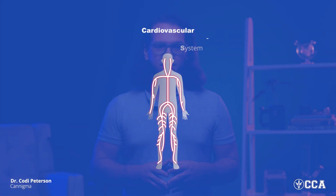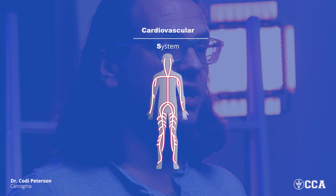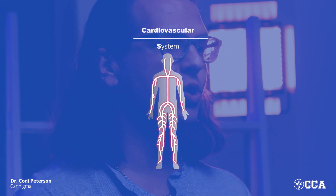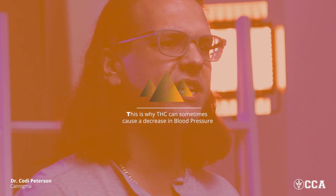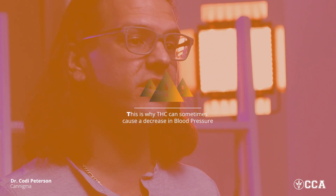Moving on to the cardiovascular system, which is involved in moving blood throughout the body. Obviously the core of the circulatory system is the heart, but this also includes all the vasculature — the veins and arteries throughout the body. If we zoom in closely on these veins and arteries, we find the endocannabinoid system is there as well. It can actually regulate vascular tone, affecting blood pressure.